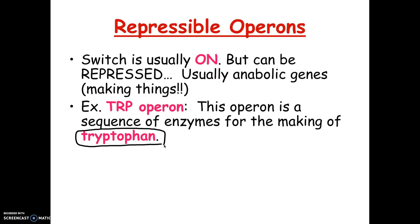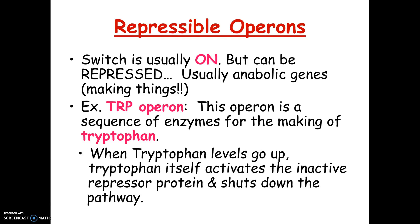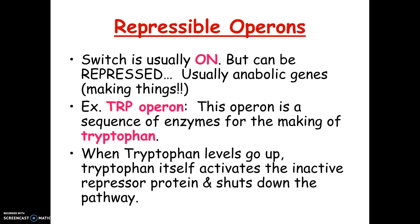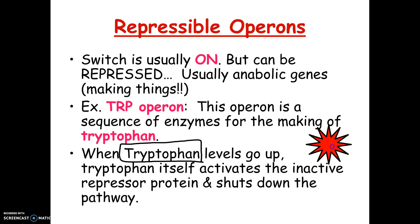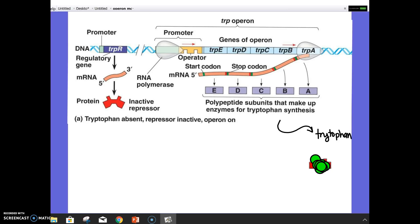If bacteria enter an environment where tryptophan is already present, they can turn this operon off to avoid wasting energy. This is an example of negative feedback — tryptophan itself, the product of the pathway, goes back and turns the pathway off. It does this by activating the repressor protein. The repressor is made all the time, but in this particular operon it's made in an inactive form — tryptophan is what activates it.